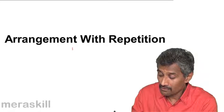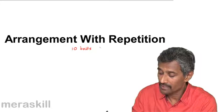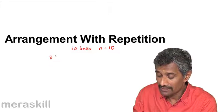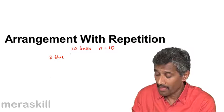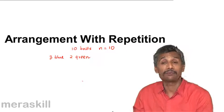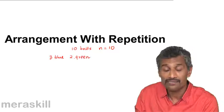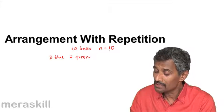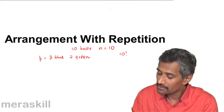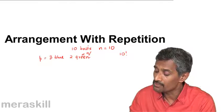Suppose there are 10 balls, so n = 10, out of which 3 are identical blue balls and 2 are green balls. How many ways can they be arranged, given that all 3 blues are identical to each other and all 2 greens are identical to each other? The 10 balls can be arranged in 10 factorial ways. We can call the blue group P and the green group Q, with the remaining 5 being of different colors.